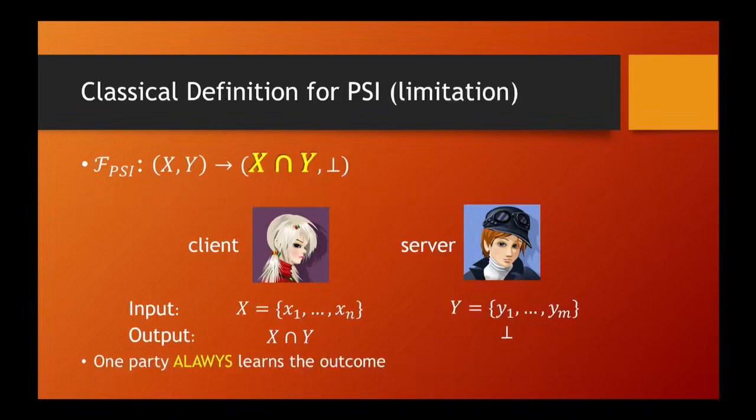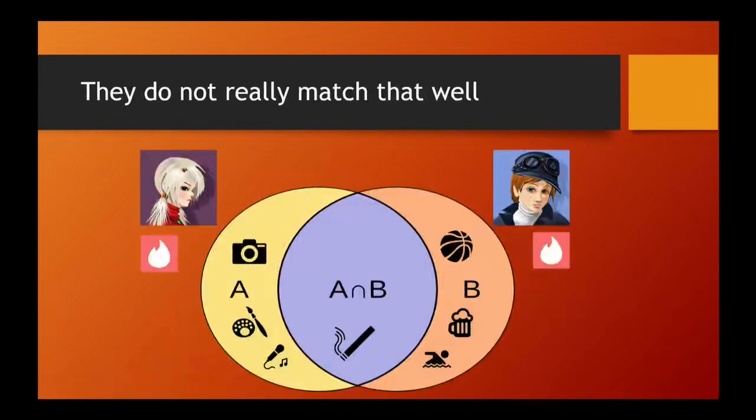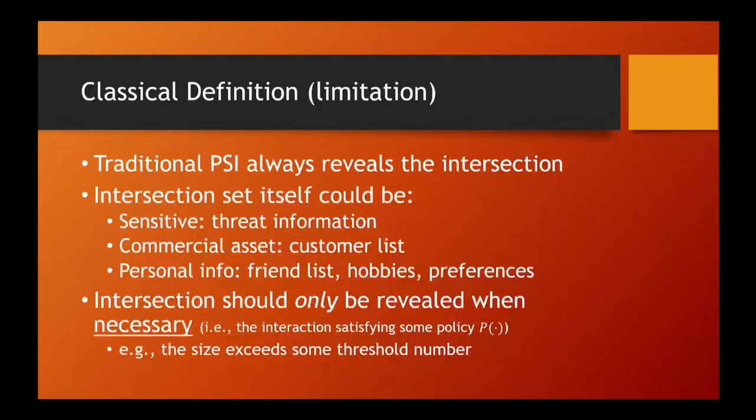The formalization of PSI is elegant. However, it has some limitations. We argue that in some applications, unconditionally revealing the intersection may not be desirable. Consider the matchmaking application. If Alice and Bob only share one or two common hobbies, they are not going to be friends eventually. It is a compromise of privacy to reveal the common hobbies to a stranger. We find that always revealing the intersection is not preferable in many natural settings.